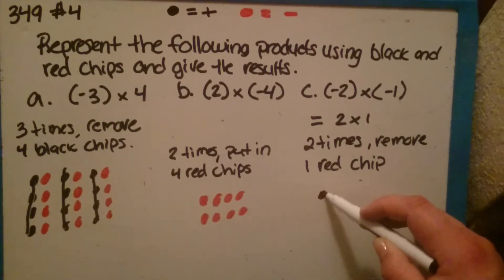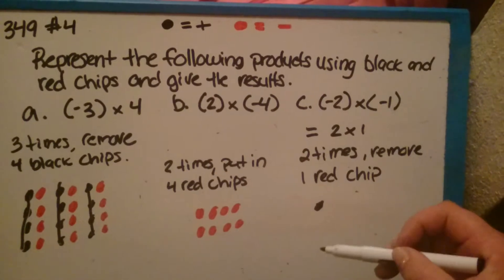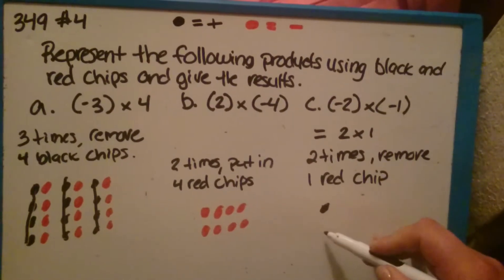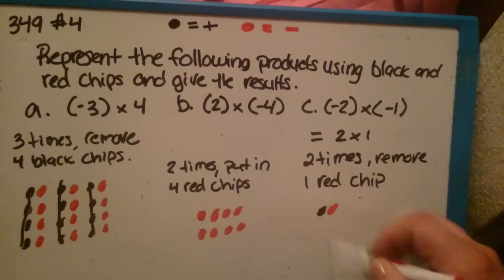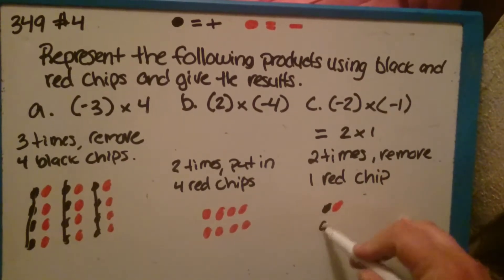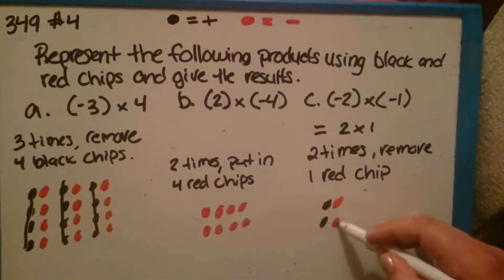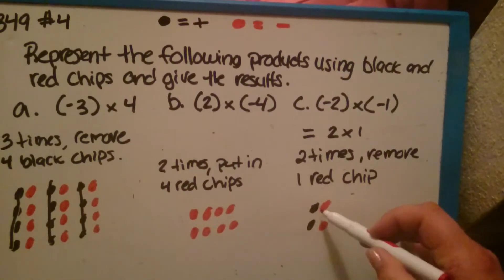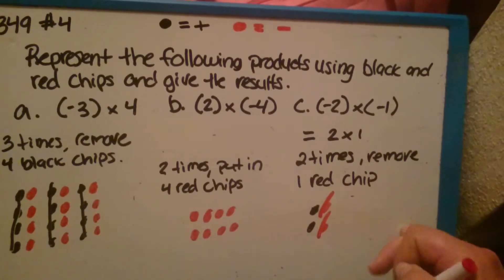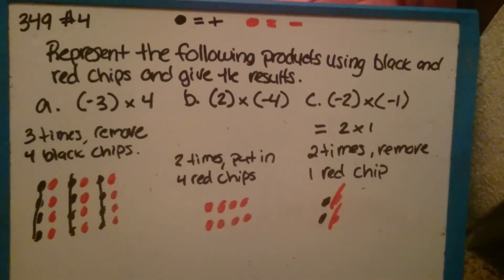So we'll do, since it says 2 times remove 1 red chip, we're going to do 2 groups of 1. But since there's 0 pairs, we'll do a black one and a red one, and a black one and a red one. And then it says 2 times remove 1 red chip. So you can remove that one, that's 1, that's 2, and you end up with positive 2 as your answer.